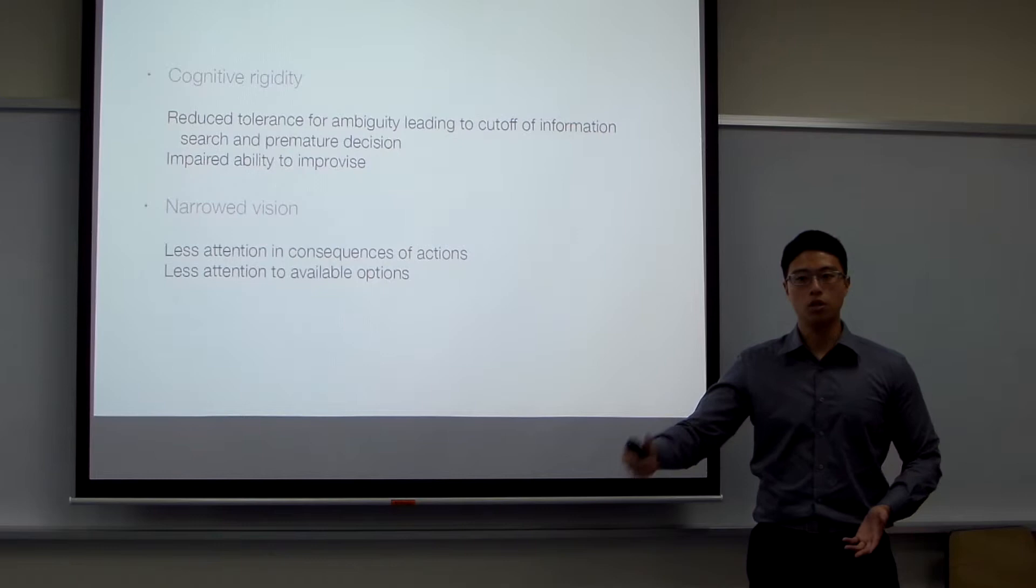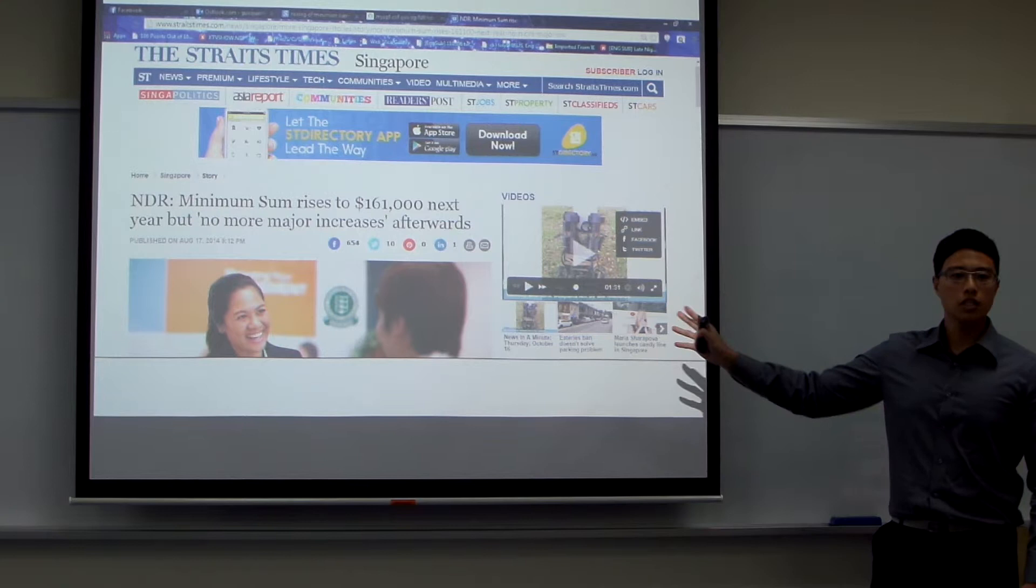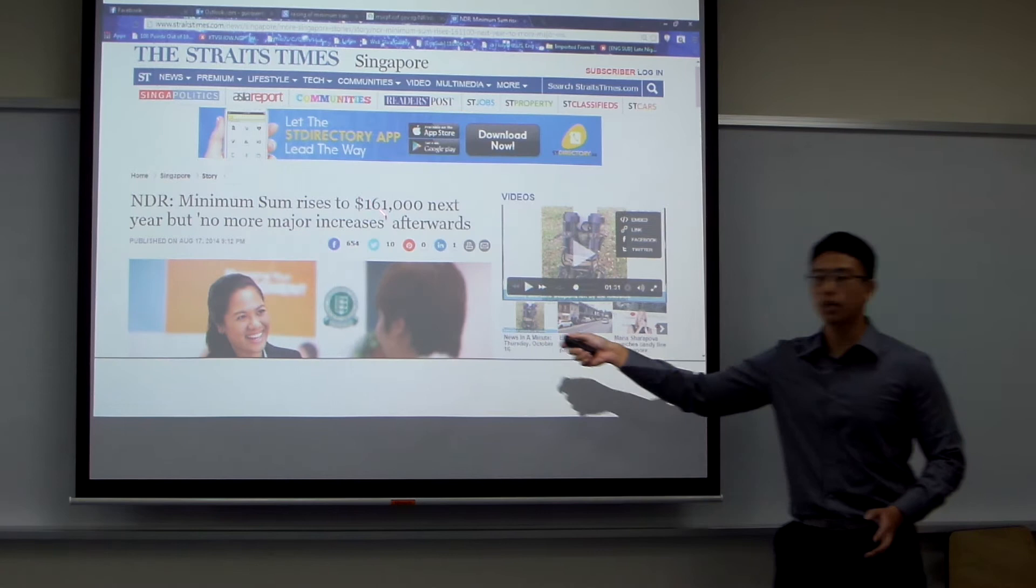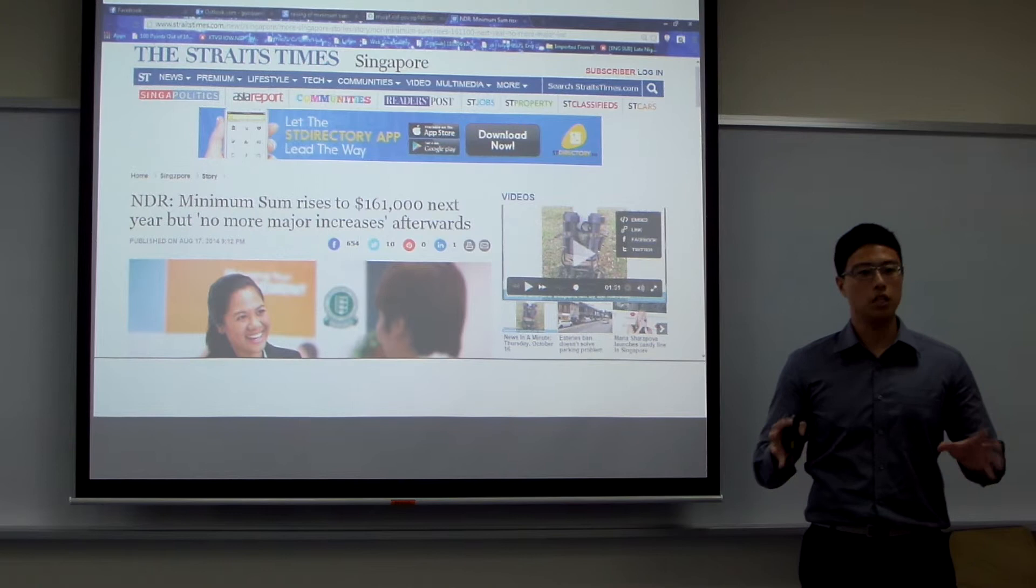Obviously when you see an article, you will take notice of certain keywords - for example, in this case, the 161,000 and the minimum sum. This is an example of keywords which I'm going to talk about.